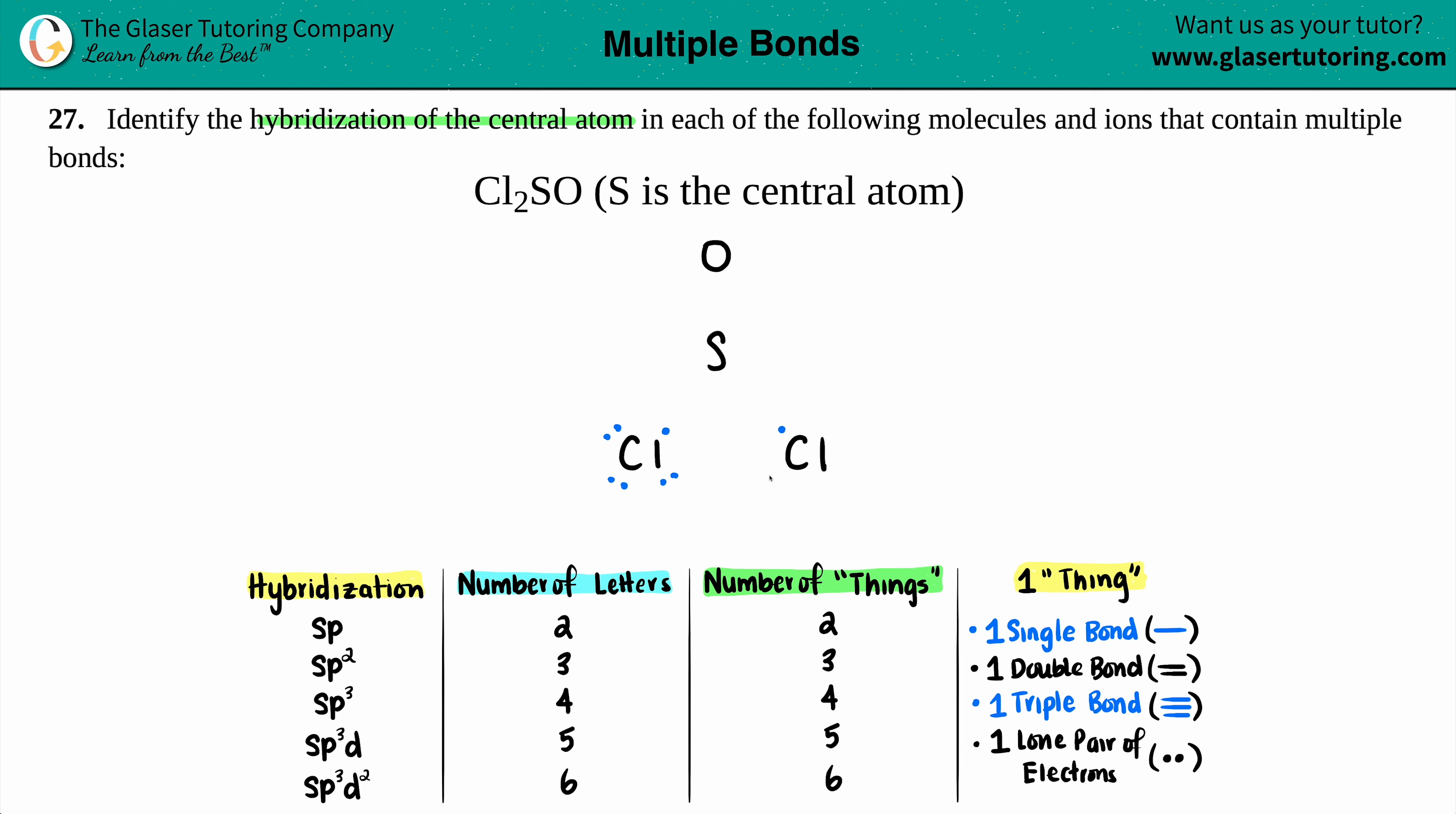Chlorine has 7 valence electrons: 1, 2, 3, 4, 5, 6, 7. Same thing for this chlorine. Sulfur and oxygen are both in group 6A or 16 on the periodic table, so that's 6 valence electrons around each. Single bond it up all the time, and then check to see if you need a double bond. Dot to dot is single bond.